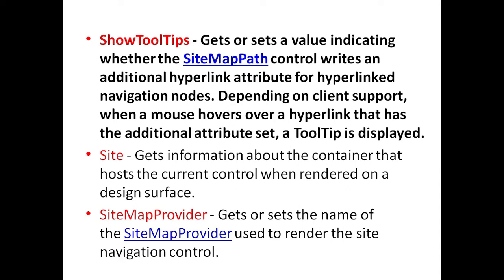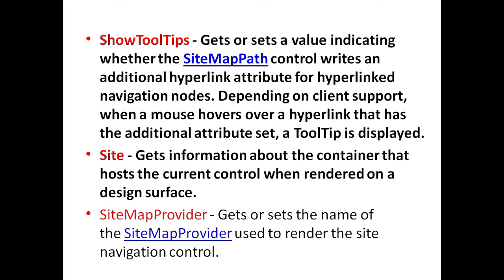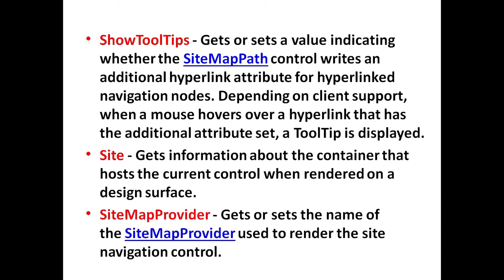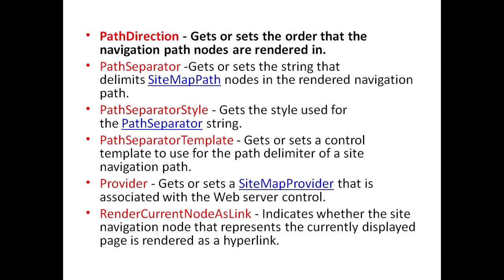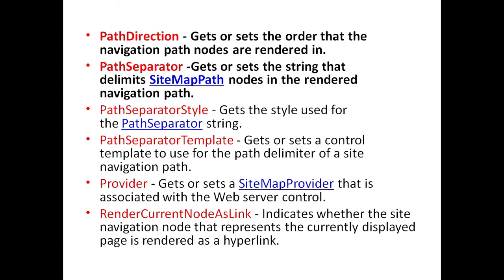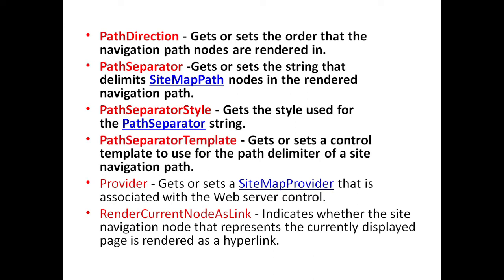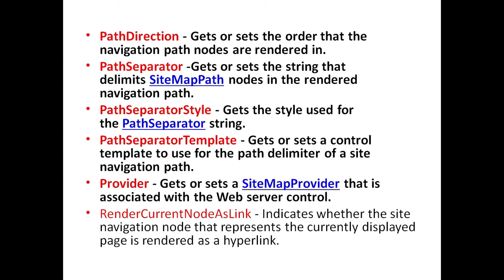Site property is used to get information about the container that hosts the current control when rendered on a design surface. SitemapProvider is used to get or set the name of the sitemap provider used to render the site navigation control. PathDirection property is used to get or set the order in which the navigation path nodes are rendered. PathSeparator is used to get or set the string that delimits the sitemap path nodes in the rendered navigation path. PathSeparatorStyle gets the style used for the PathSeparator string. PathSeparatorTemplate is used to get or set a control template to use for a path delimiter of a site navigation path. Provider is used to get or set a sitemap provider that is associated with the web server control.